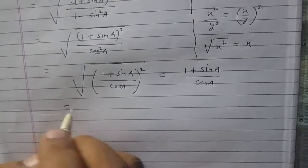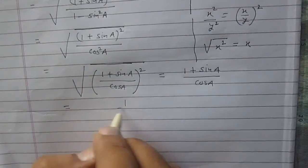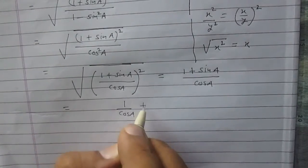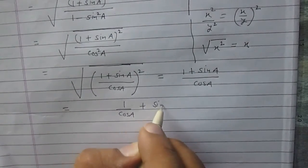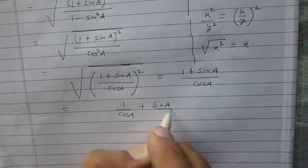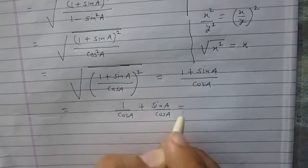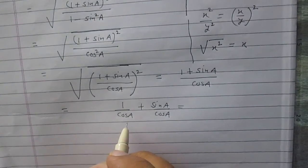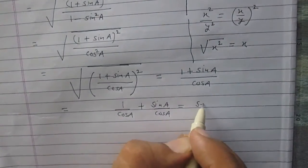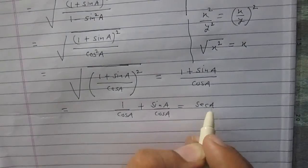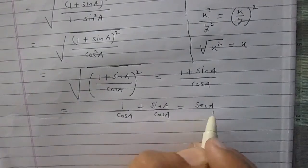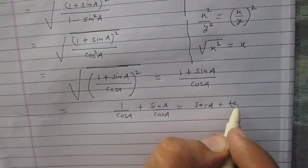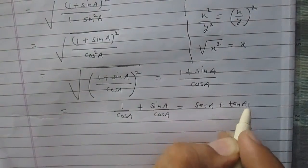Further we can simplify this as 1 upon cos a plus sin a upon cos a. We know that 1 upon cos a is sec a, and sin a upon cos a is tan a. Therefore the left hand side equals sec a plus tan a, which is the right hand side.